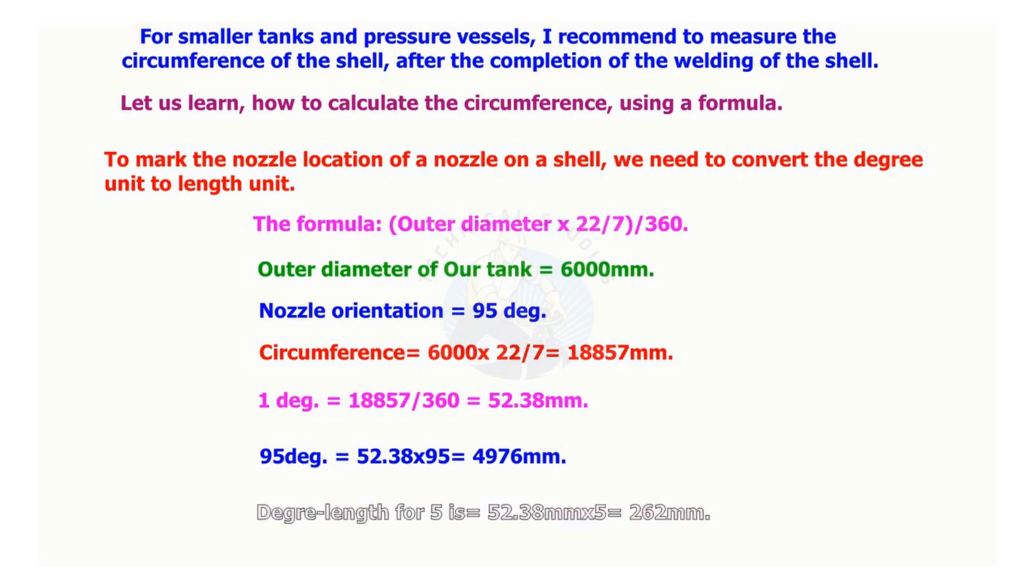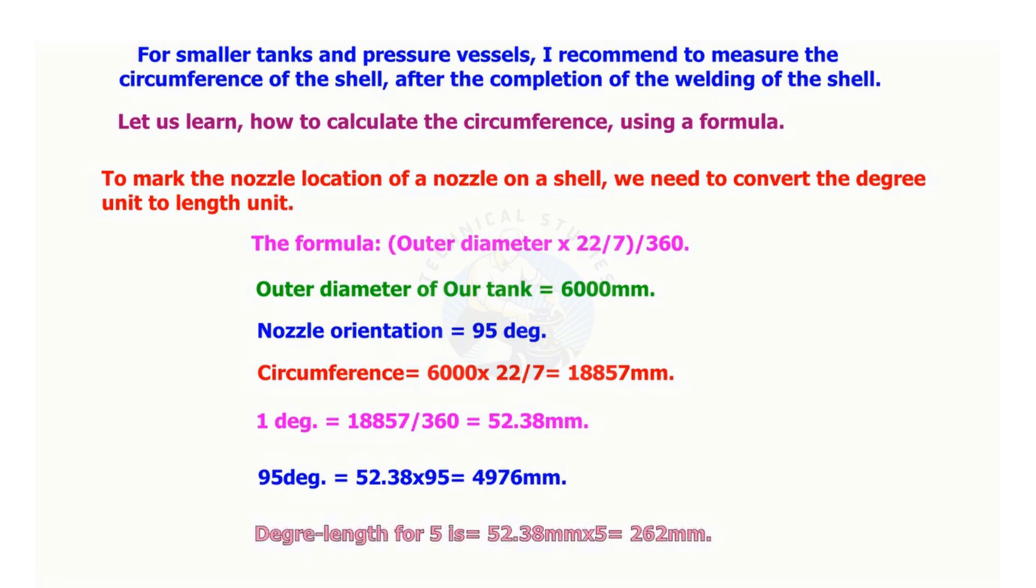Length of 5 degrees equals 52.38 multiplied by 5 equals 262 millimeters.